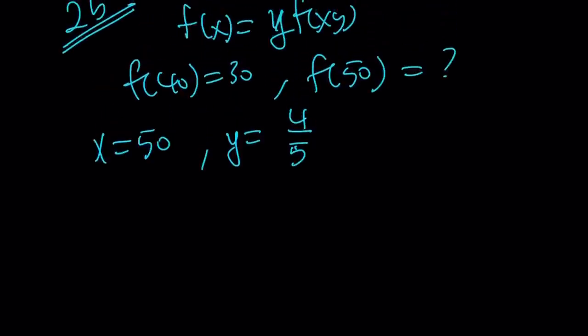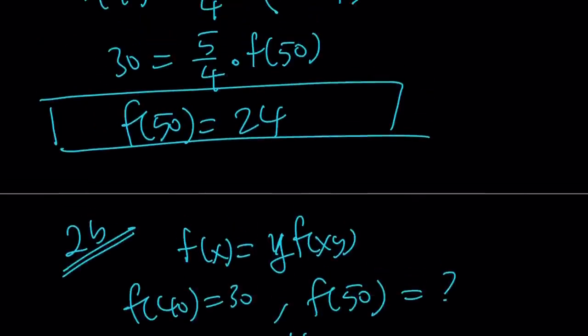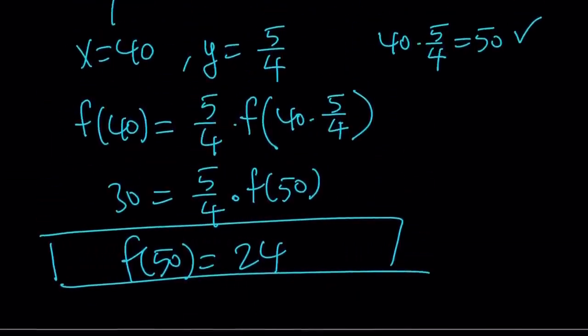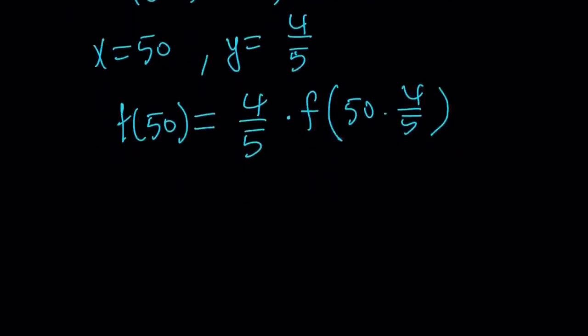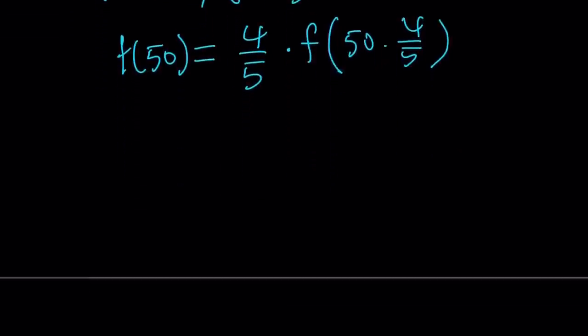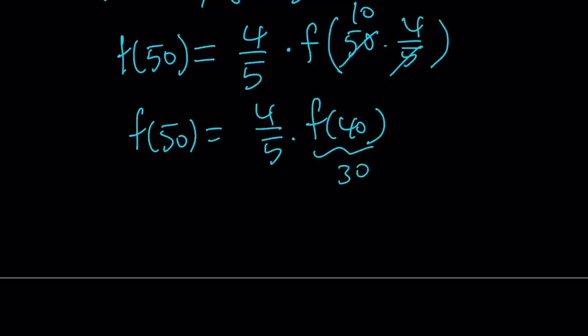Now, if you replace x with 50, you get f of 50. And on the right-hand side, if you replace y with 4 fifths, you're going to get 4 fifths multiply by f of 50 times 4 fifths. Because x is 50. And remember, the first one, which is 2a, used x equals 40. So it used different x and y values, if you pay attention to that. And this is going to give us the answer more directly, because we're looking for f of 50. And f of 40, this is going to be 40. f of 40 is known to be 30. So this is going to be 24.